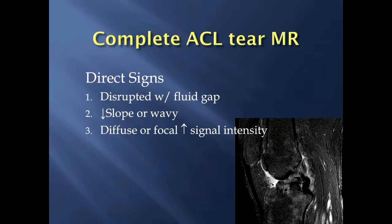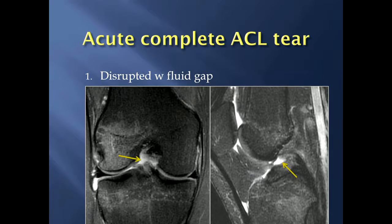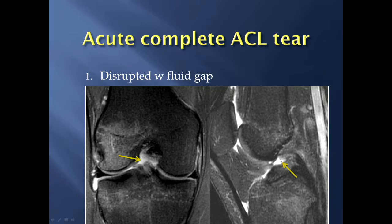Starting with a complete ACL tear, there are three direct signs on MRI. The first indication is if the entire ACL is disrupted with a fluid gap within it. Notice on this coronal image you have fluid signal, and on this sagittal image, looking from the tibial attachment of the ACL upward, it should have a taut appearance going straight up to its attachment site — you've got this fluid gap here indicating a complete ACL tear.